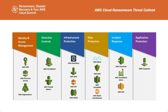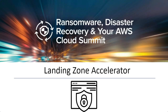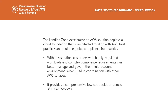Inspector operates at the application level — if you're developing software and download a library from the internet with an unknown vulnerability, Inspector can check for that. Fortunately, there's the Landing Zone Accelerator, a fast and efficient way to deploy everything just mentioned with one piece of software and a few clicks. It combines 35-plus AWS services and essentially deploys the Well-Architected Framework for you.